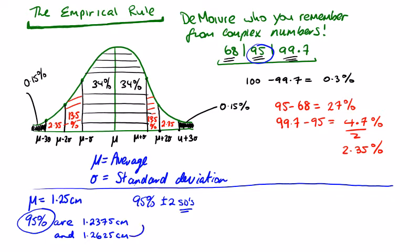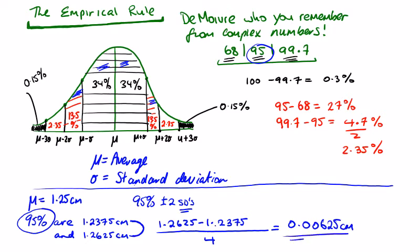So if we get the difference between these two numbers, how many gaps are there? There's one. If we come up to the graph, one, two, three, four standard deviations involved in plus or minus two, obviously. So it's a really simple sum: 1.2625 take away 1.2375. And if we get our answer to that, what's the difference between these numbers? We know what we're going to do with our answer, we're going to divide it by four. So if we divide 1.2625 minus 1.2375 by four, we're going to get 0.00625 centimeters. So this will be the standard deviation.